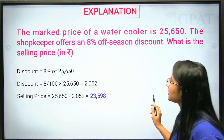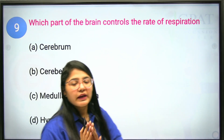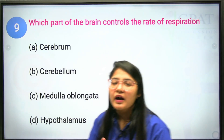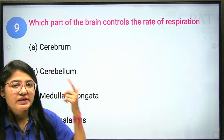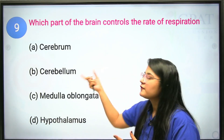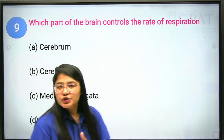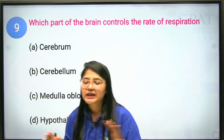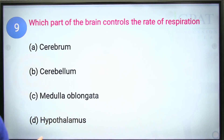Ninth question: which part of the brain controls the rate of respiration? Respiration is involuntary and controlled by the medulla oblongata. The cerebellum maintains body balance, the cerebrum handles memory and thinking, and the hypothalamus controls body temperature, thirst, and feelings. Correct answer: medulla oblongata.